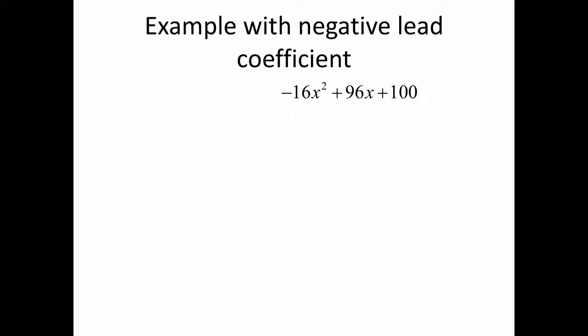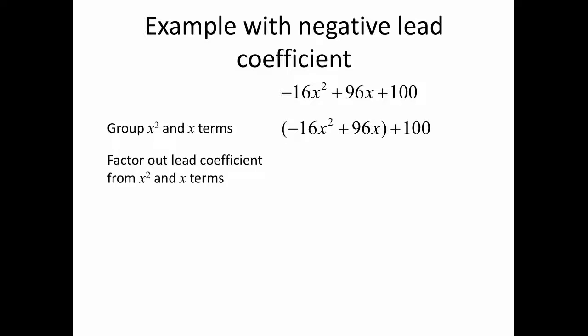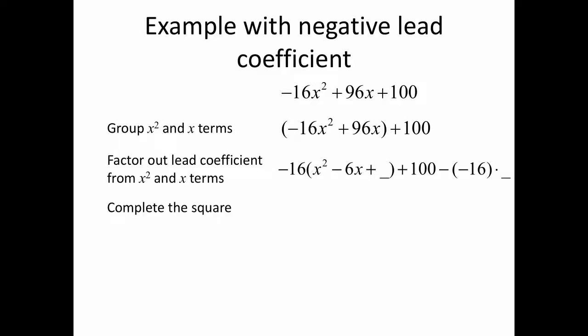One last example: we're going to look at what happens when the lead coefficient is negative. As before, we group the x-squared and x terms. This time we factor out negative 16, making the coefficient of x squared equal to 1 inside the parentheses, leaving us with x squared minus 6x. On the right side, we subtract negative 16 times whatever we put in that blank space.